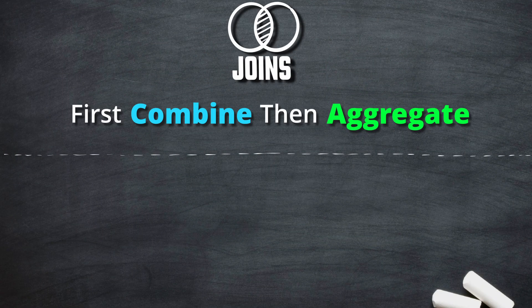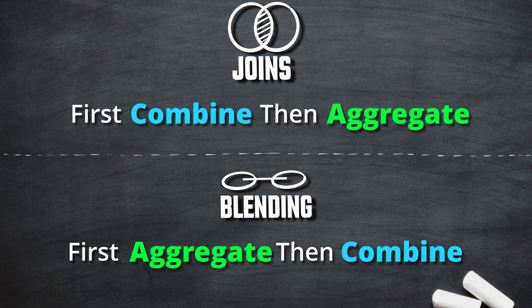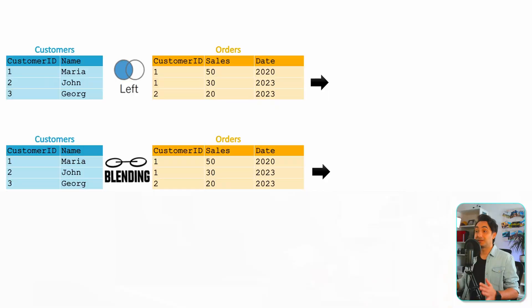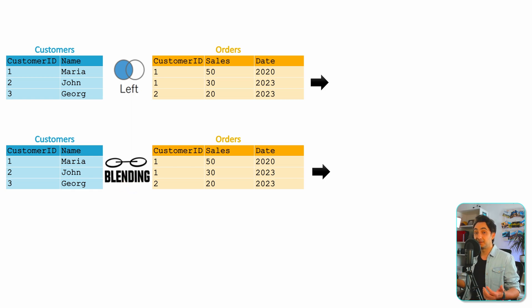The main difference between joins and data blending is this: data blending is like a left join, but in joins the data can combine first and then the aggregation happens. In data blending it is exactly the opposite — the aggregation happens first and then the data gets combined. Let's use a simple example with our customers and orders tables to understand this.